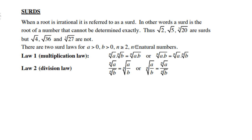Surds. When a root is irrational, it is referred to as a surd. In other words, a surd is the root of a number that cannot be determined exactly. Thus, square root of 2, square root of 5, and cube root of 30 are surds.